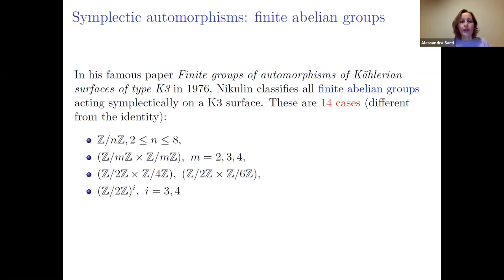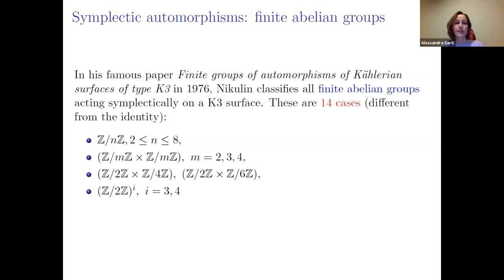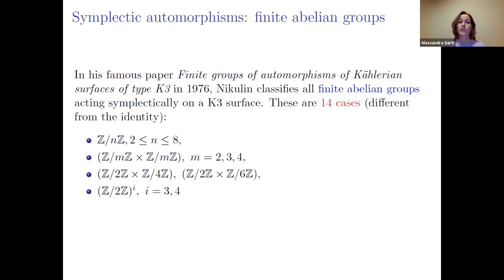Consider finite abelian groups acting on K3 surfaces. In the famous 1976 paper 'Finite groups of automorphisms of Kählerian surfaces of type K3,' Nikulin classified all finite abelian groups acting symplectically on a K3 surface. There are 14 cases different from the identity.